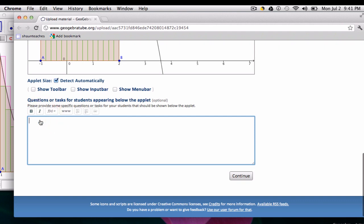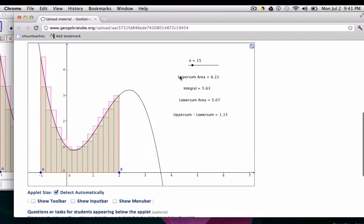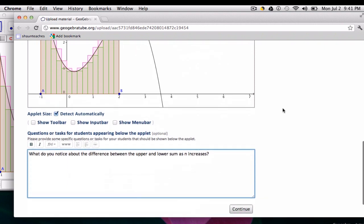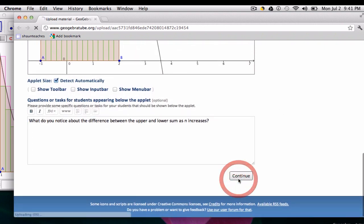But you might want to think about what do you notice about the difference between the upper and lower sum as n increases. A question about how the upper and lower sum areas approach the integral value as you increase the number of rectangles. Click continue.